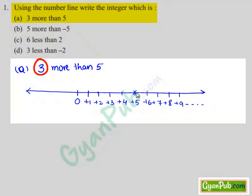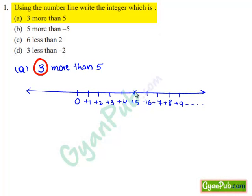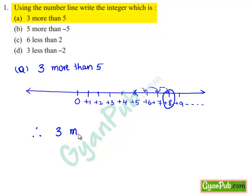And we move 3 steps right of plus 5: 1, 2, 3. We reach plus 8 on the number line. Hence, the integer which is 3 more than 5 is 8.